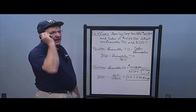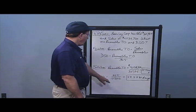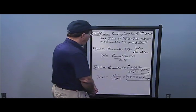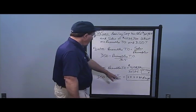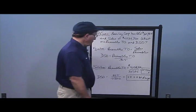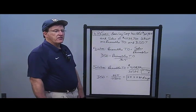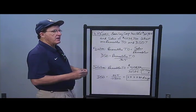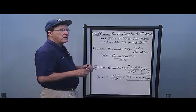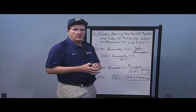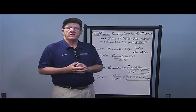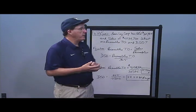Days sales outstanding is 365 divided by the receivables turnover. I take 365 divided by 12.9302 and get 28.2284 days sales outstanding. That means receivables are collected every 28.23 days. That is the answer to Problem 3.